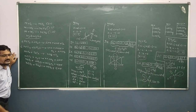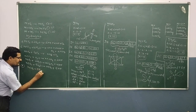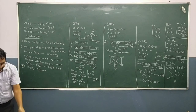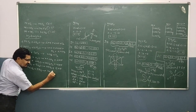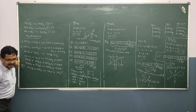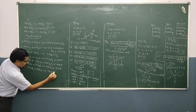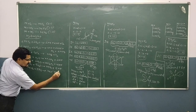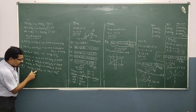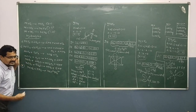Xenon difluoride reacts with phosphorus pentafluoride to form cationic and anionic species: XeF+ and PF6-. Xenon tetrafluoride reacts with SbF5 to get XeF3+ and SbF6-. Xenon hexafluoride reacts with KF to get XeF5- and KF6-. Xenon difluoride, tetrafluoride, and hexafluoride react with fluoride compounds to form cationic and anionic species.